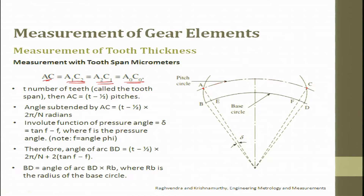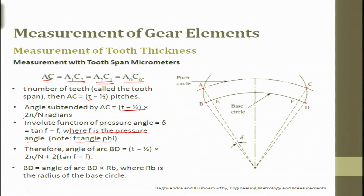For T number of teeth (the tooth span), A-C equals T minus half the pitch. The angle subtended by A-C is (t − ½) × (2π/n) radians. The involute function of pressure angle φ (del) is defined as tan φ − φ, where φ is the pressure angle. Therefore, the arc B-D equals (t − ½) × (2π/n) radians plus the pressure angle subtended.